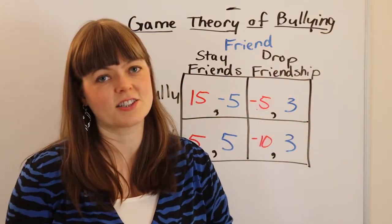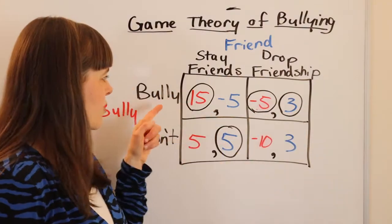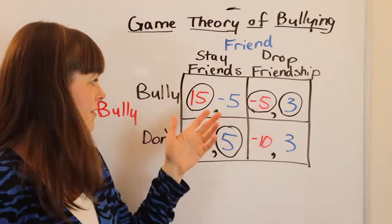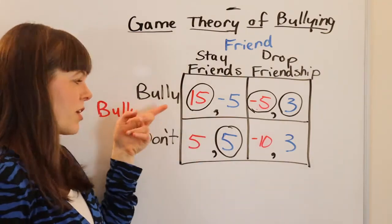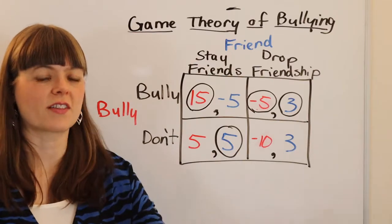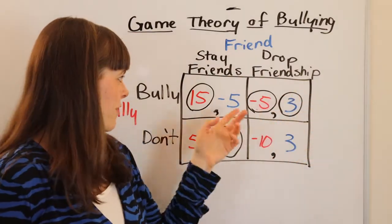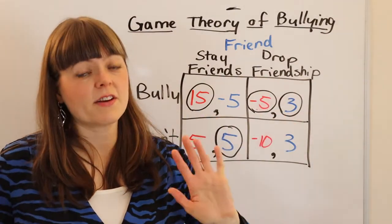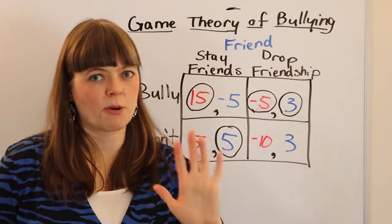Let's look at the Nash equilibrium. We can see the Nash equilibrium is where the bully bullies. For this bully, depending on their payoffs, we have a dominant strategy of bullying. The Nash equilibrium we actually observe is where the bully bullies and people drop the friendship — even if they go along in the moment and don't confront, they eventually just drop the friendship. So we observe this behavior.